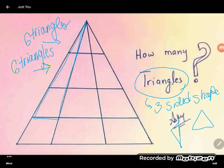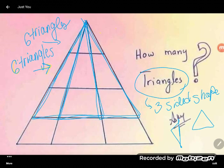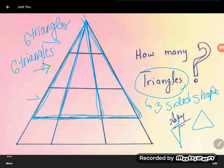Again next row. One, two, three, four, five, or the entire thing makes six. So I see another six triangles there.